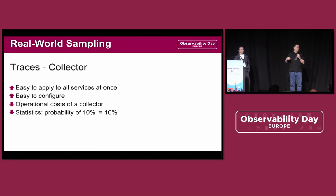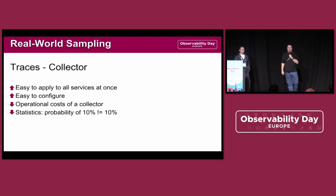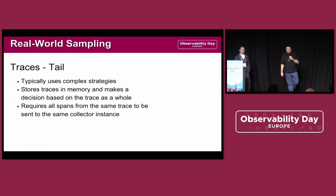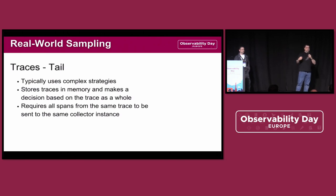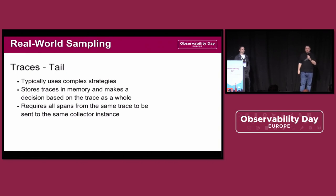You have to install, deploy, maintain, and take care of the collector, and we have the same problem with statistics. Now we have a second way of doing sampling at the collector: tail sampling. We typically use that for complex strategies — we can apply different strategies depending on how the data looks.